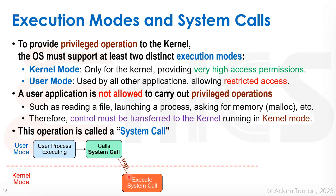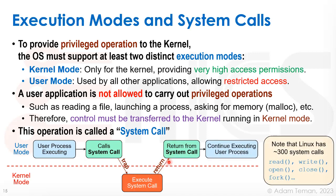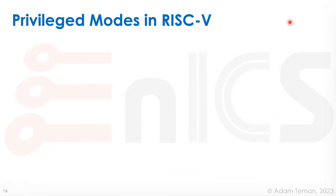When a user process needs a privileged operation, it calls the operating system via a system call. What happens is we trap into the operating system — we trap the machine and go into kernel mode. Now in kernel mode, the kernel executes the system call, does what it needs such as reading the file, and then returns from the system call and continues executing the user process. In Linux there are about 300 system calls — things like read, write, open, close, fork. The user initiates it, traps into the kernel, the kernel handles it, and then we return to the user process.